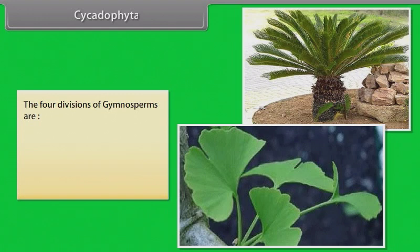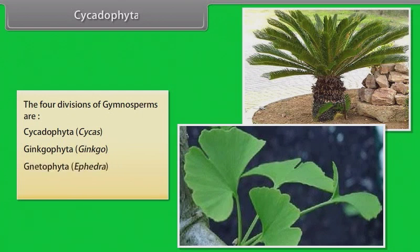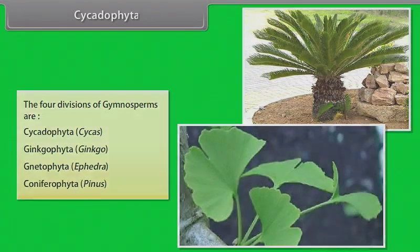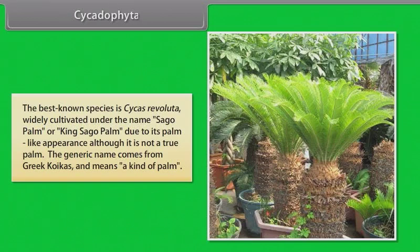Cycadophyta: The four divisions of Gymnosperms are Cycadophyta, Ginkgophyta, Gnetophyta and Coniferophyta. The best known species is Cycas revoluta, widely cultivated under the name Sago palm or King Sago palm due to its palm-like appearance, although it is not a true palm. The generic name comes from Greek Koicus and means a kind of palm.